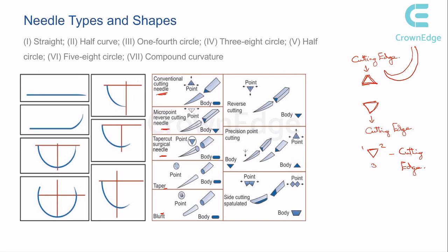A taper needle is generally used in internal organs that do not add much resistance to needle working. The last type is a blunt needle, where the tip is blunt. Blunt needles are used in visceral organs — soft internal tissues that do not require much cutting effort.